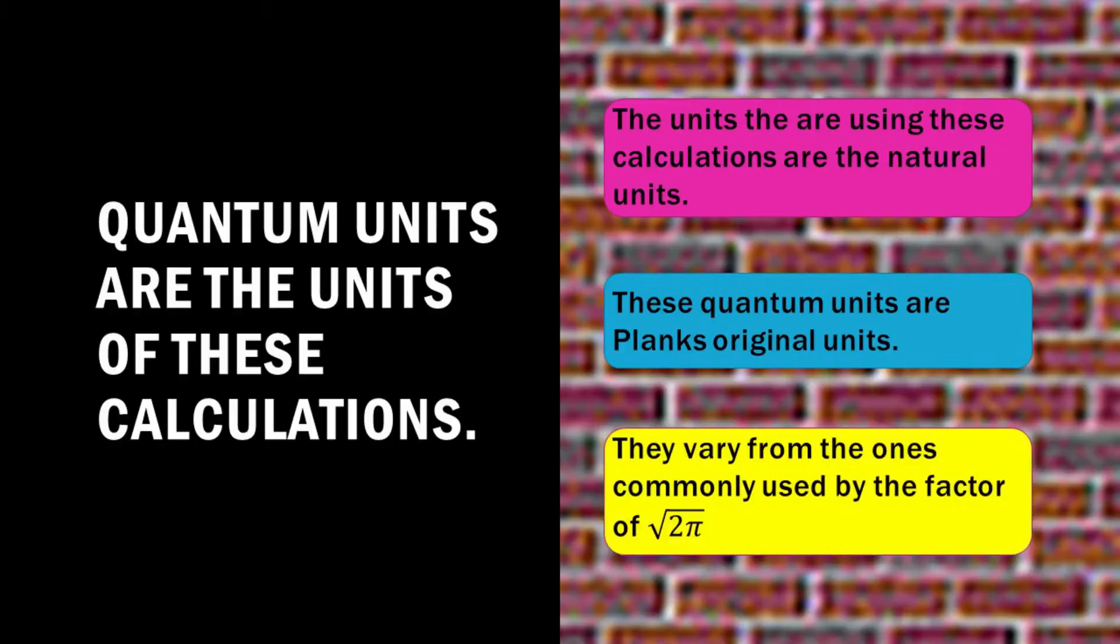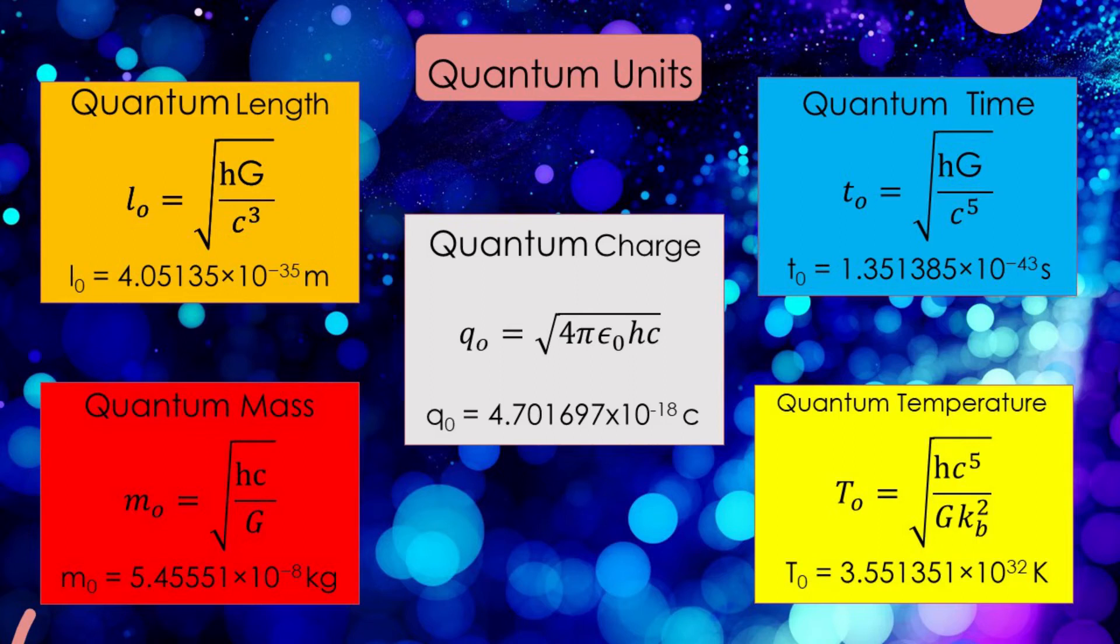The units that are used in these calculations are the natural units. These quantum units are Planck's original units and they vary from the ones commonly used in textbooks by the factor of the square root of 2 pi. Here are the main quantum units.